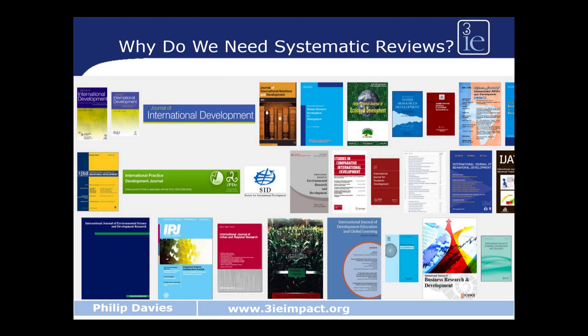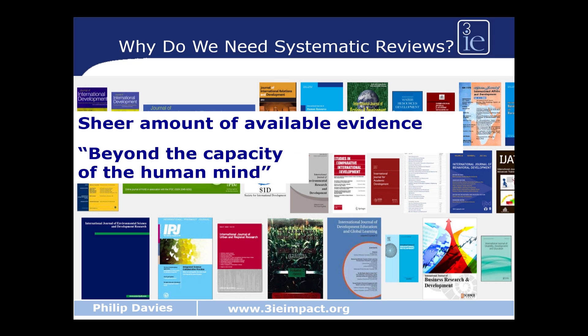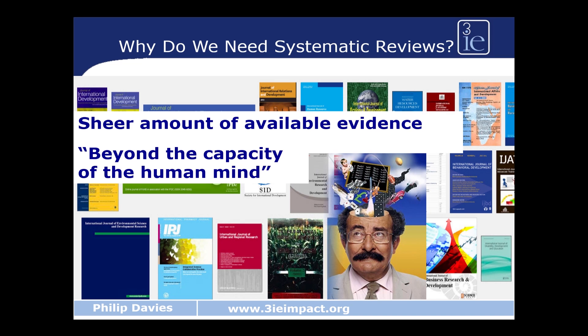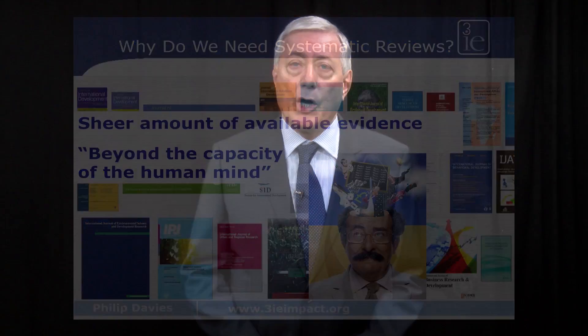So why do we need systematic reviews of evidence? As you can see on this slide, this is just a small collection of the number of journals we have in public policy, economics and international development. One of the reasons why we need systematic reviews is the sheer amount of evidence available, which has been described as being beyond the capacity of the human mind. We need something to help us harness the existing evidence so that we can cope with it.